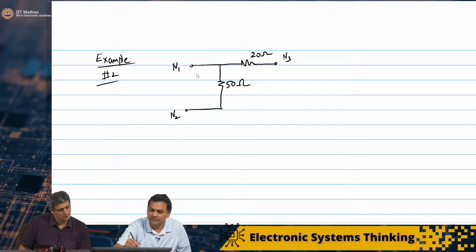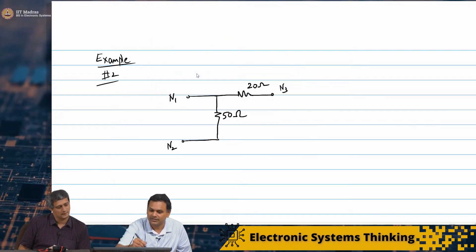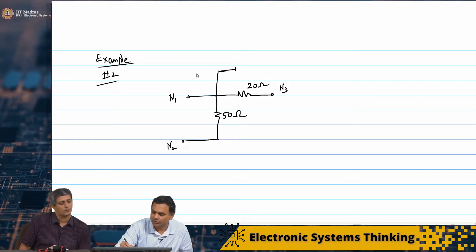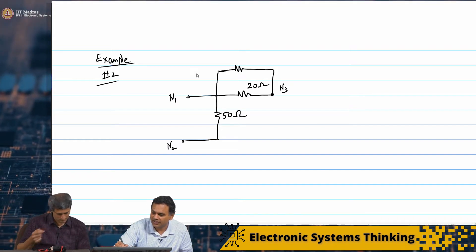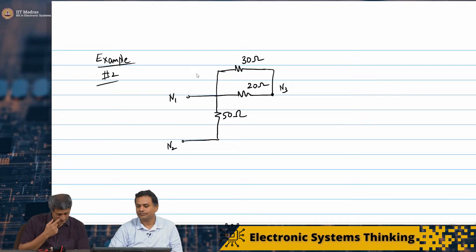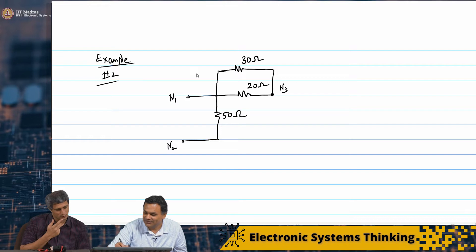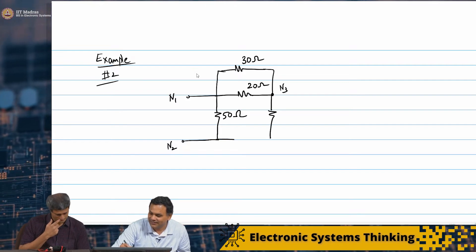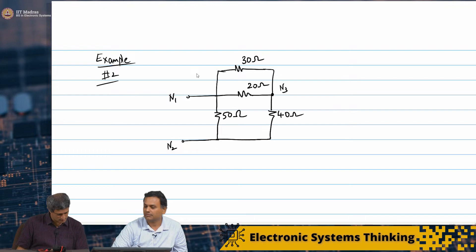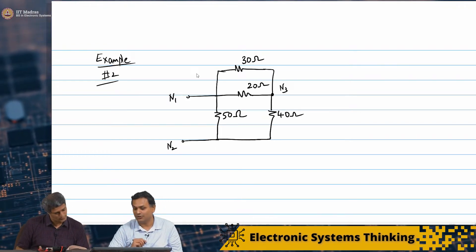Let me create some space. You say there is also a 30 ohms — yes. And then between N3 and N2, there is 40 ohms. And between N3 and N2, there is another 50 ohms.